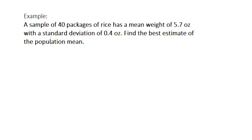Let's look at an example of how to calculate a point estimate. Let's say we have a sample of 40 packages of rice and those have a mean weight of 5.7 ounces with a standard deviation of 0.4 ounces. We want to find the best estimate of the population mean. We're told that the mean weight of 5.7 ounces is from our sample.